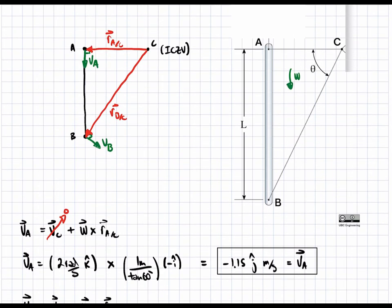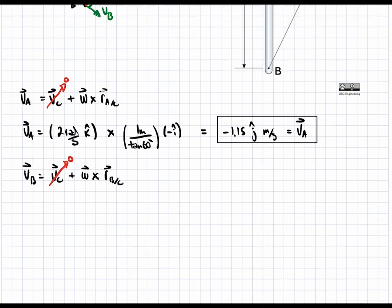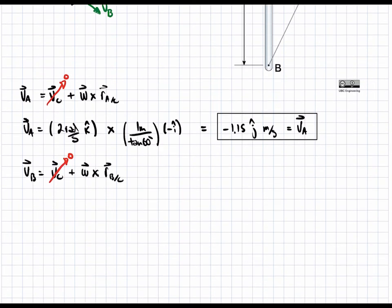We can see that since we're given this theta here, and we're given this length of the beam here, we can find this length over here. But we actually need to split it into two components, the y component and the x component. So let's go ahead and do that. First of all, let's get rid of VC because we know VC is the instantaneous center of zero velocity. So it has no velocity.